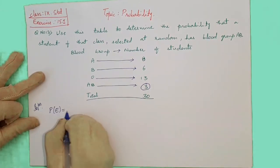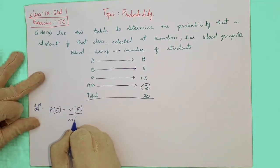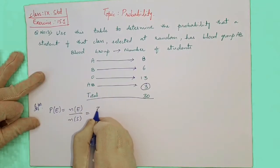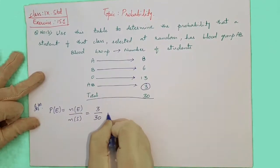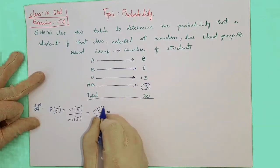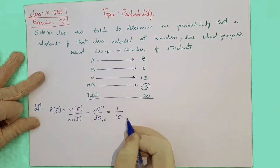P of E is nothing but N of E by N of S. So it will be 3 by 30. 3 by 30 means 3 divides 3, 3 divides 10 gets cancelled. So it will be 1 by 10.